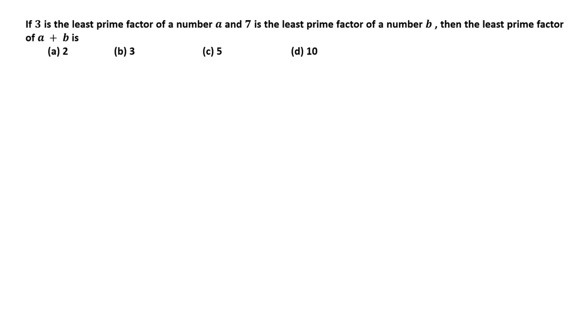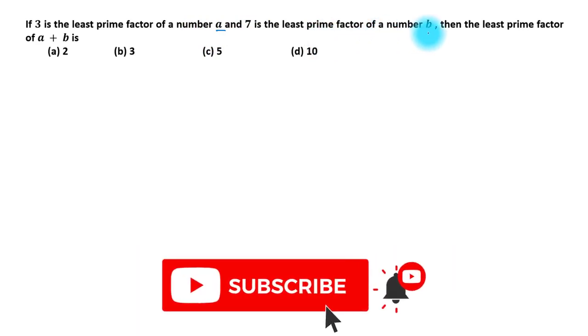Hi guys, welcome to Number X. In this lecture we will solve a question from real numbers. So let us start. If 3 is the least prime factor of a number a and 7 is the least prime factor of a number b, then least prime factor of a plus b is...